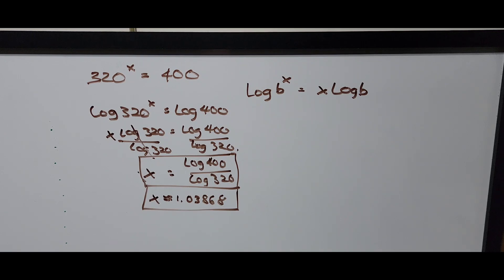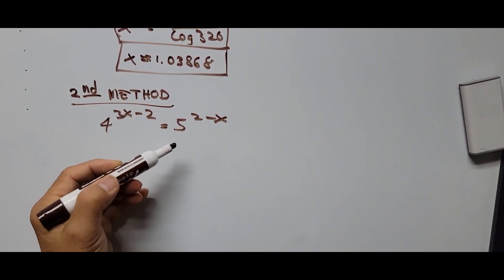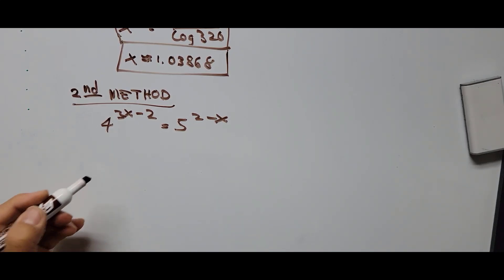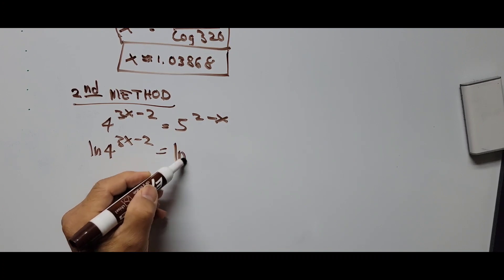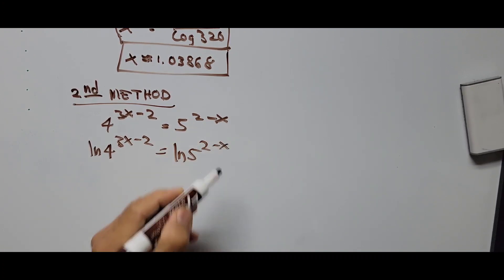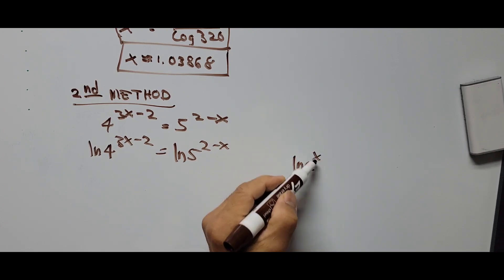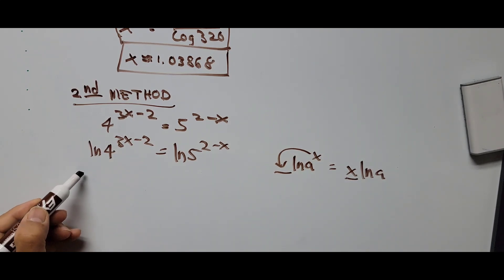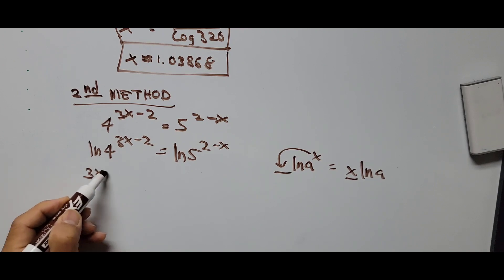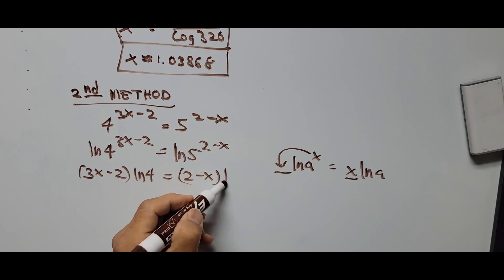Now let's do the second method using the laws of the natural logarithm. We write the equation again: 4 raised to the power 3x minus 2 equals 5 raised to the power 2 minus x. Taking the natural log of both sides gives ln of 4 raised to 3x minus 2 equals ln of 5 raised to 2 minus x. Using the rule ln of a raised to x equals x times ln of a, we bring the exponent to the front as a coefficient: 3x minus 2 times ln of 4 equals 2 minus x times ln of 5.